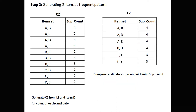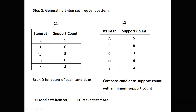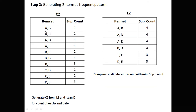Step 1 as usual: generate the one-itemset frequent pattern. Five elements are there — a, b, c, d, e. We count how many times each item appears in the original database and get the count. All items satisfy the minimum support count of 3, so all are directly copied from C1 to L1. Step 2: generating two-itemset frequent patterns. We take combinations of a with all elements, b with remaining elements, c with remaining, and d with remaining. Not all combinations are copied from C2 to L2, as some do not satisfy the minimum support count of 3.